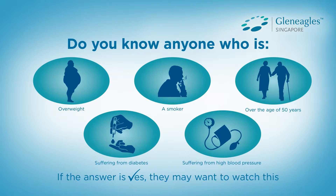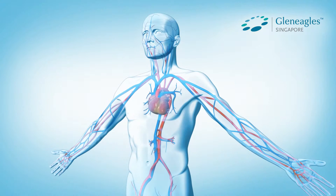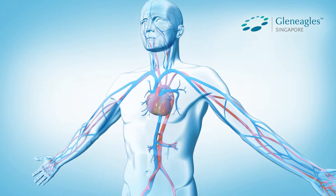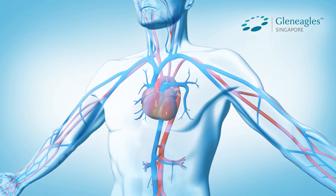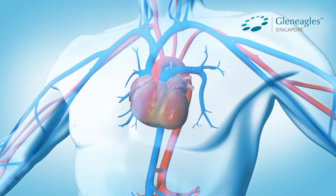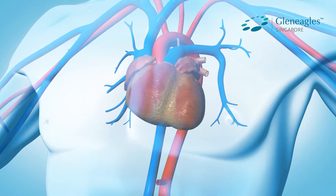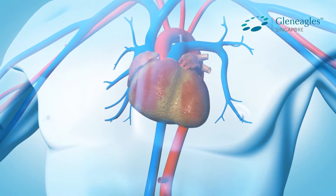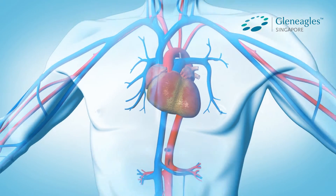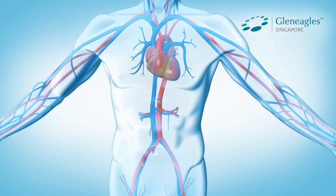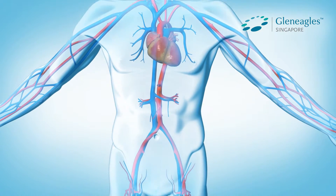In this video, we will explore how coronary artery disease develops and the symptoms to look out for. The heart is a strong muscular pump that moves the blood throughout your body daily. The blood pumped not only supplies oxygen and nutrients to all organs, tissues, and cells.